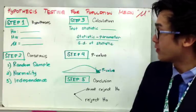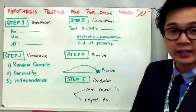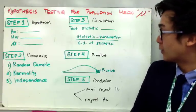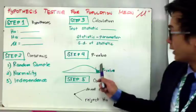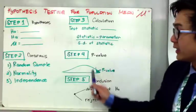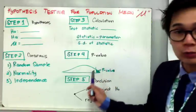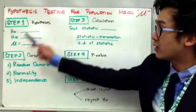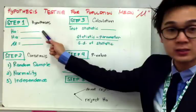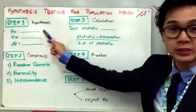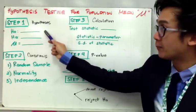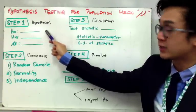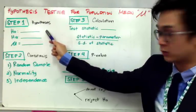The fourth step is finding the p-value. The p-value is the numerical value that we will use to help us decide whether to reject or not reject the null hypothesis, which is always assumed to be true.